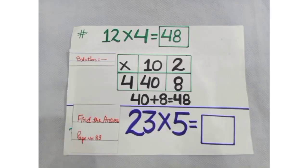In the homework, dear students, solve the sum of multiplication 23 multiplied by 5 given at page number 89 of your maths book.